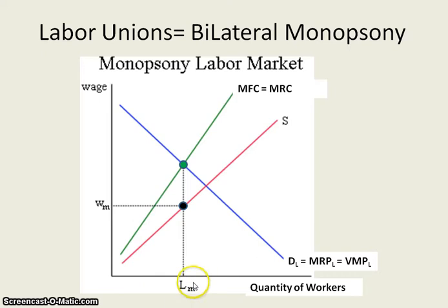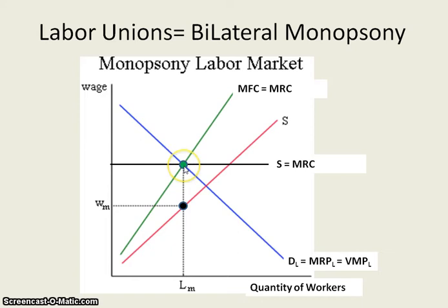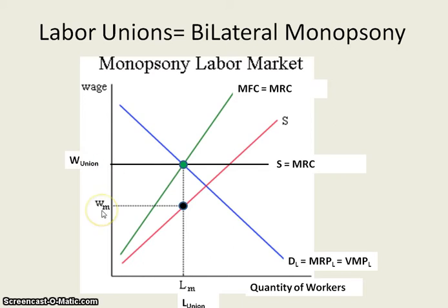This is how they determine their quantity: they use the point where MRC equals MRP within the monopsony. But because they are all working together — you either keep us all or keep nobody — what ends up happening is they have a perfectly elastic supply curve where everybody gets paid the same exact amount. So you have the same number of workers as the monopsony but a higher wage rate.